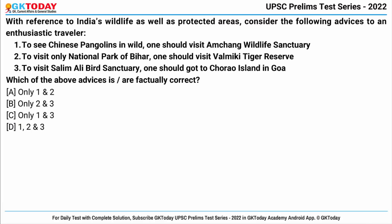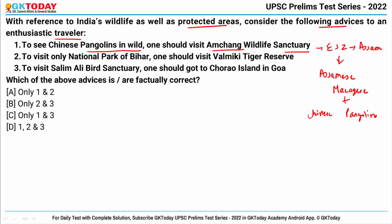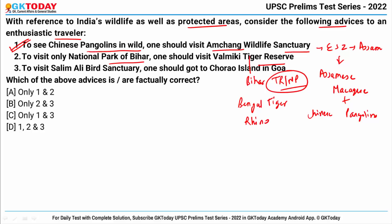Question number two: with reference to India's wildlife and protected areas, consider the following statements. First, to see Chinese Pangolins in the wild, one should visit Amchang Wildlife Sanctuary. This sanctuary is an eco-sensitive zone located in Assam, noted for its population of Assamese Macaque and Chinese Pangolins — so this is right. Second, to visit the only national park of Bihar, one should visit Valmiki Tiger Reserve, which is both a tiger reserve and national park and has Indian rhinos and clouded leopards — this is also correct.